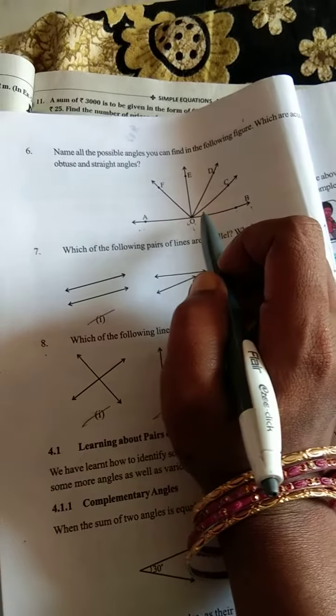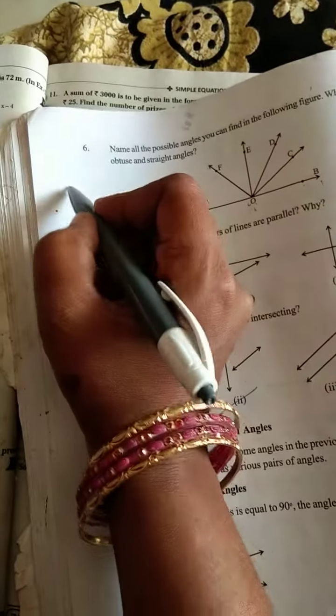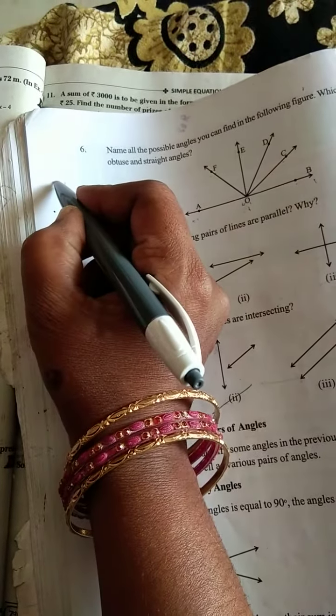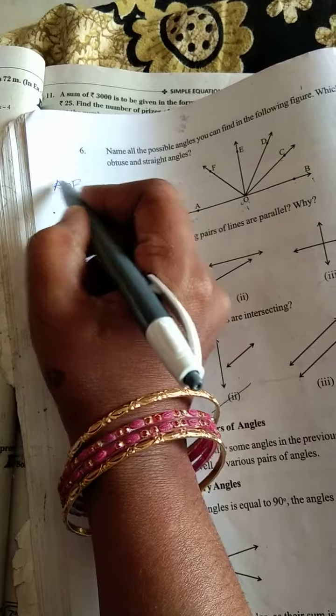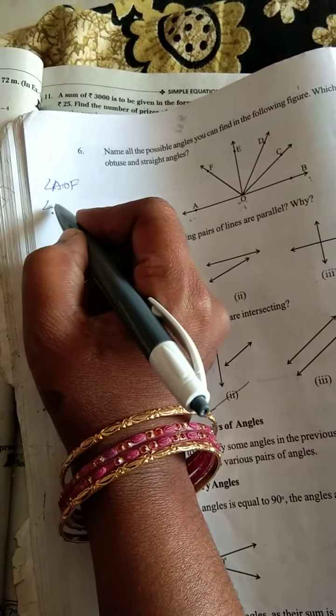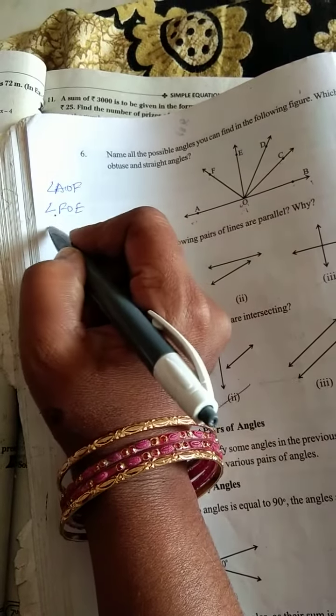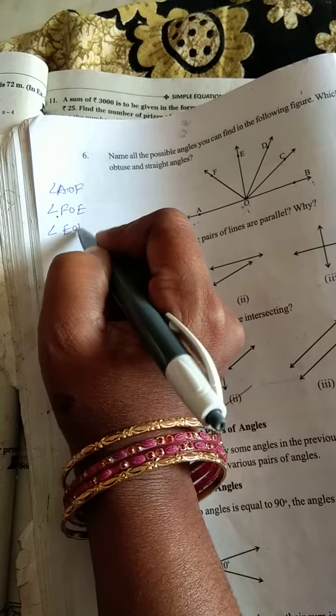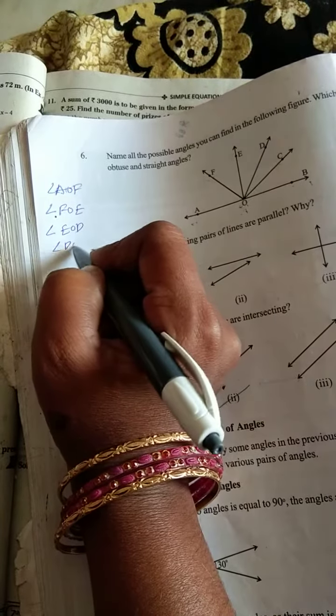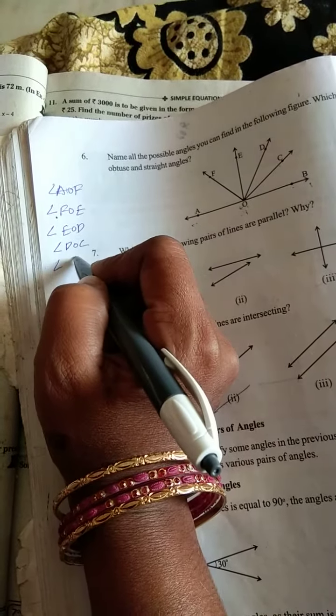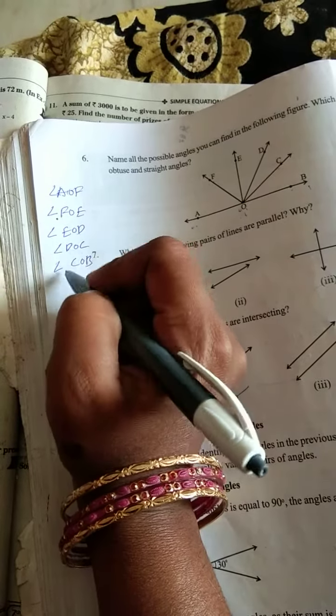You should write the acute angles: Angle A, O, F, angle F, O, E, angle E, O, D, angle D, O, C, angle C, O, B. These all are acute angles.